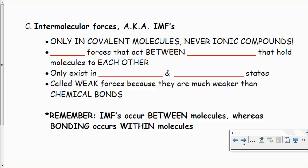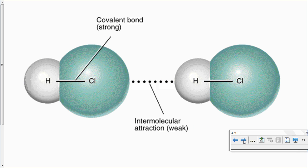Intermolecular forces, also known as IMFs, only exist in covalent molecules — never ever in ionic compounds. They are weak forces, relatively speaking, that act between molecules. It's like a magnetic stickiness that causes molecules to want to be together or not, depending on how strong the IMF is. They exist in gases and liquids; solids don't really have measurable IMFs. They're called weak forces because they're much weaker than a chemical bond, so it's easy to break an intermolecular force without putting much energy into it.